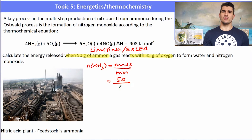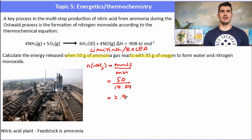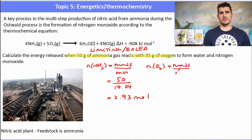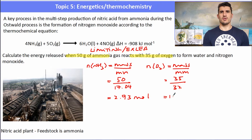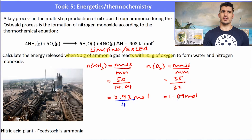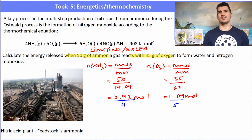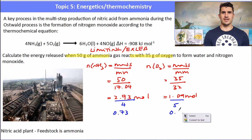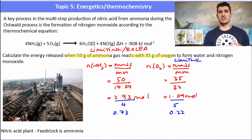I work out the number of moles of both reactants using mass over molar mass. For ammonia I get 2.93 moles, and for oxygen I get 1.09 moles. Don't make the mistake of thinking oxygen is limiting just yet — we need to divide each by their stoichiometric coefficient: ammonia by 4 and oxygen by 5. These comparison values are shown in blue. The smaller value identifies oxygen as the limiting reagent.